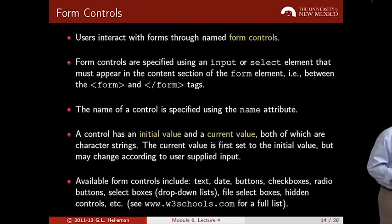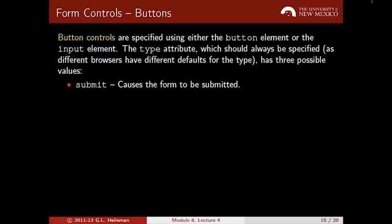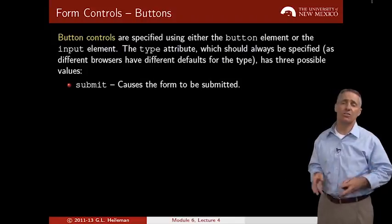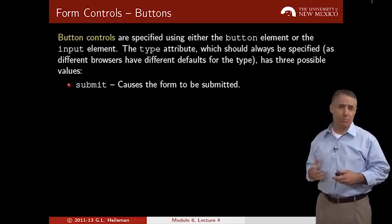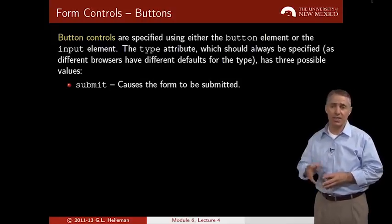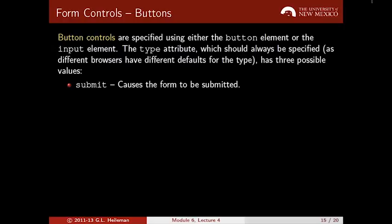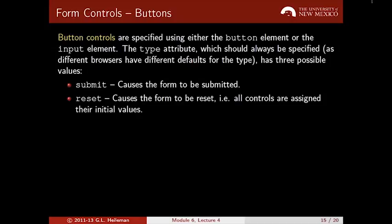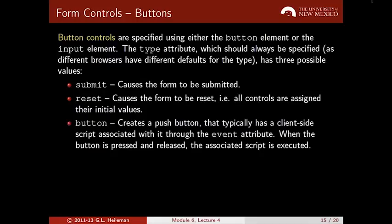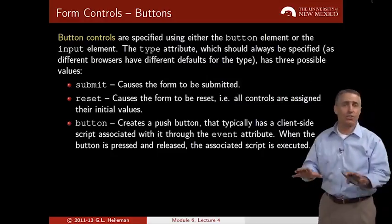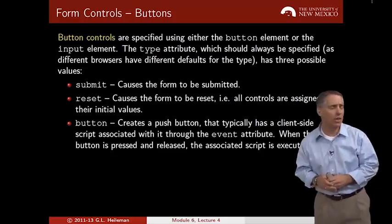Button controls are very common. Both a button element and an input element can be used to create a button, and the type attribute must always be specified. You can have a submit button, which submits the form to the URL in the action attribute; a reset button, which resets all form controls to their initial values; or a plain button, which typically has a client-side script associated with it — when pressed, some JavaScript is executed.